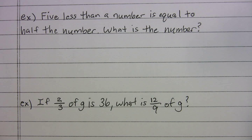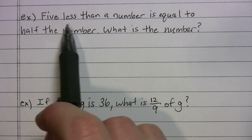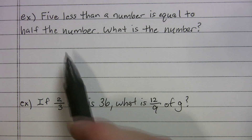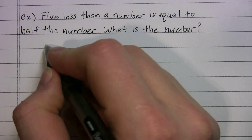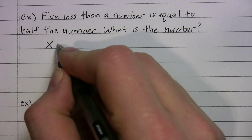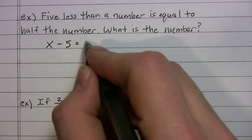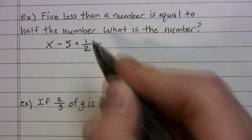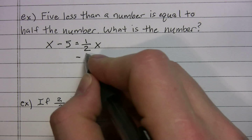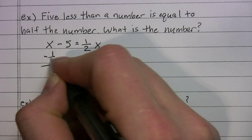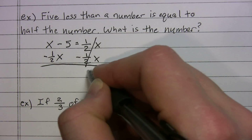The first problem says: 'Five less than a number is equal to half the number. What is the number?' We have 'less than' — remember, when it's 'less than,' we have to flip the order. So 'five less than a number' — we'll call the number X — becomes X minus 5. And it's equal to half the number, so we get X minus 5 = (1/2)X.